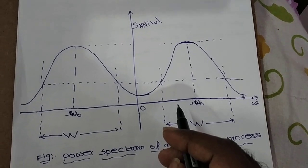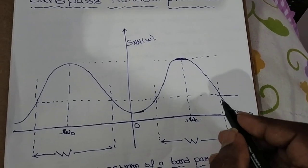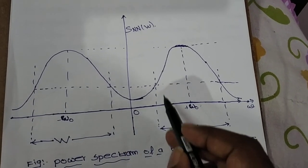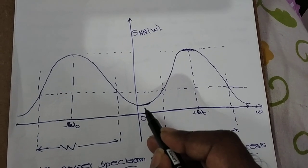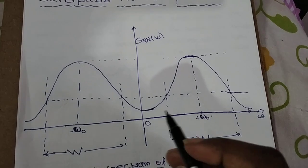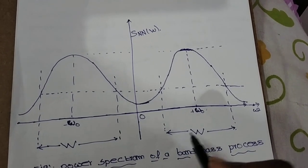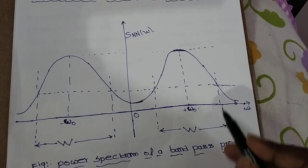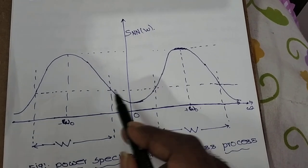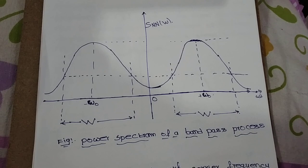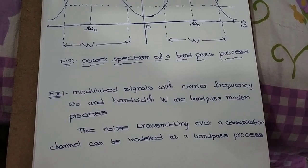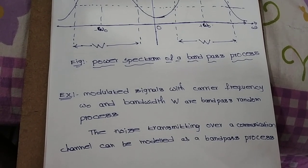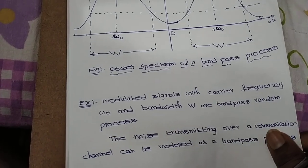For example, modulated signals with carrier frequency omega naught and bandwidth W are band pass random processes. Power density spectrum frequency components are present within the bandwidth W and does not include omega equal to zero. The noise transmitting over a communication channel can be modeled as a band pass process.